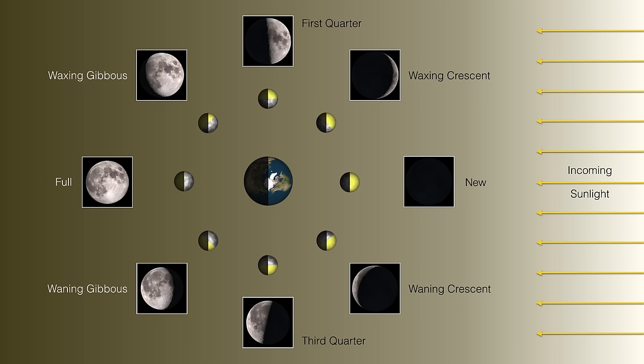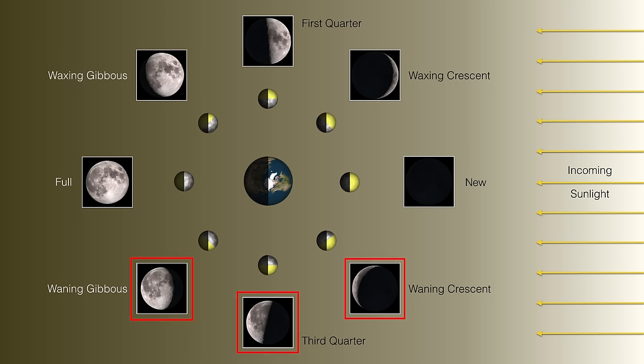The phases where light is being added to the moon we call the waxing phases, whereas when the light is being removed we call those the waning phases. So we have waxing crescent through first quarter to waxing gibbous to full. Then we repeat the cycle in reverse: from gibbous to third quarter to crescent and back to new again.